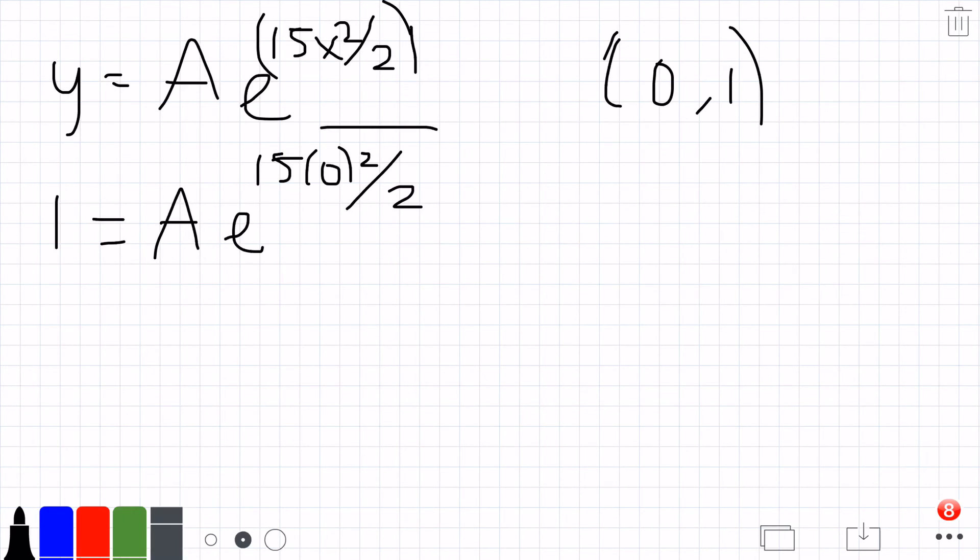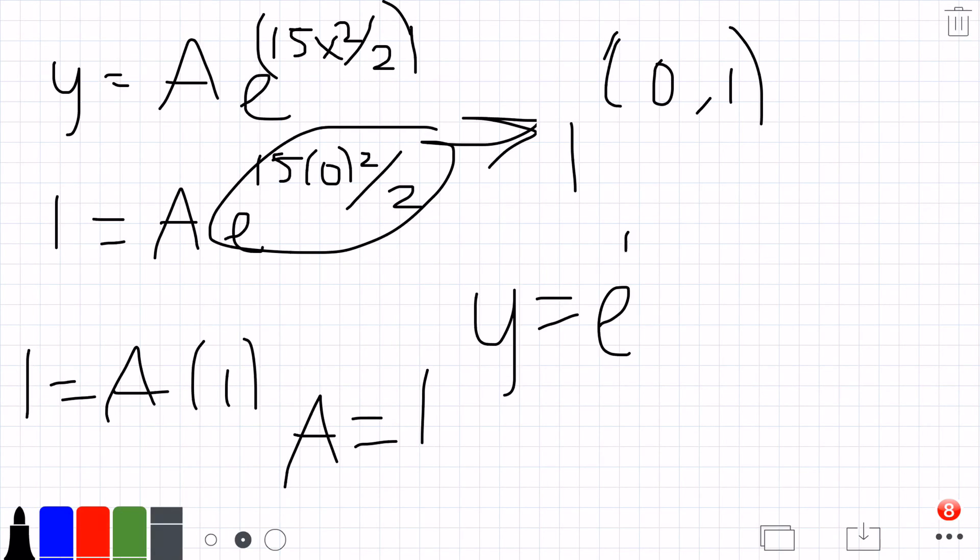So this whole term ends up going to 1. So 1 equals A times 1. A equals 1. So we can rewrite our final answer as y equals e to the 15x squared over 2.